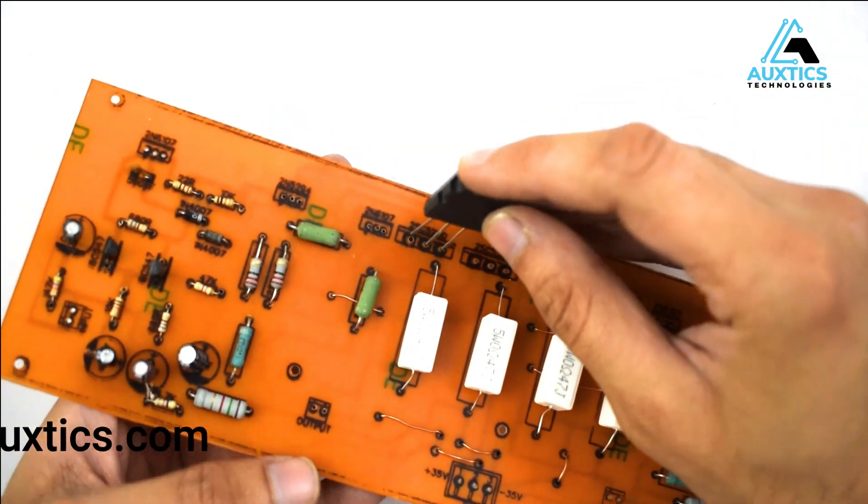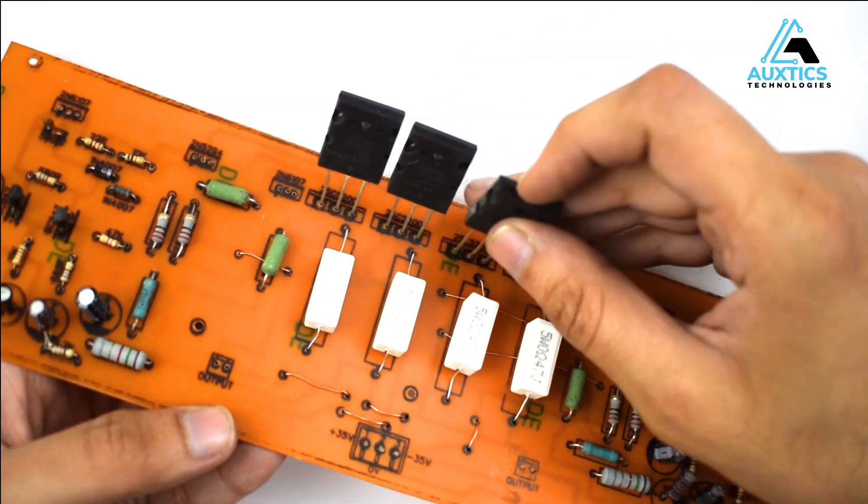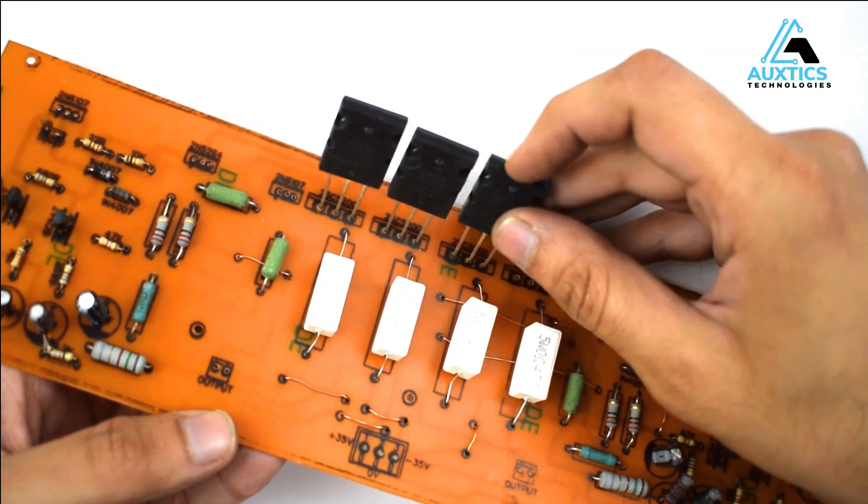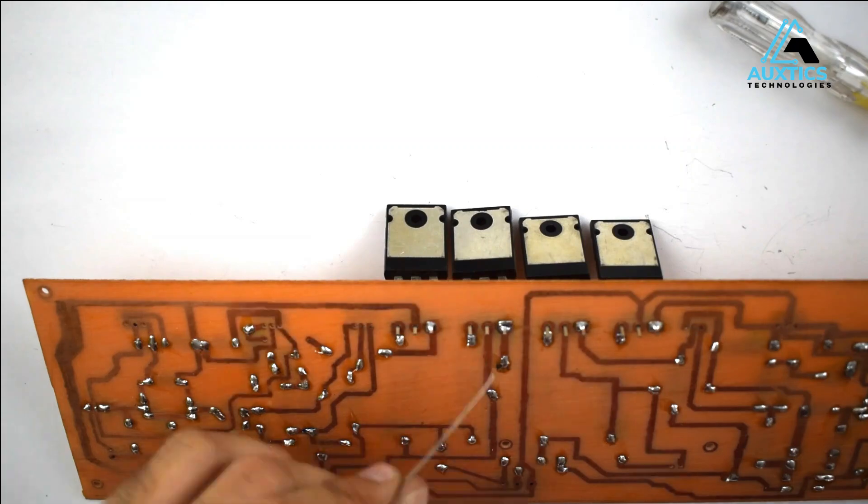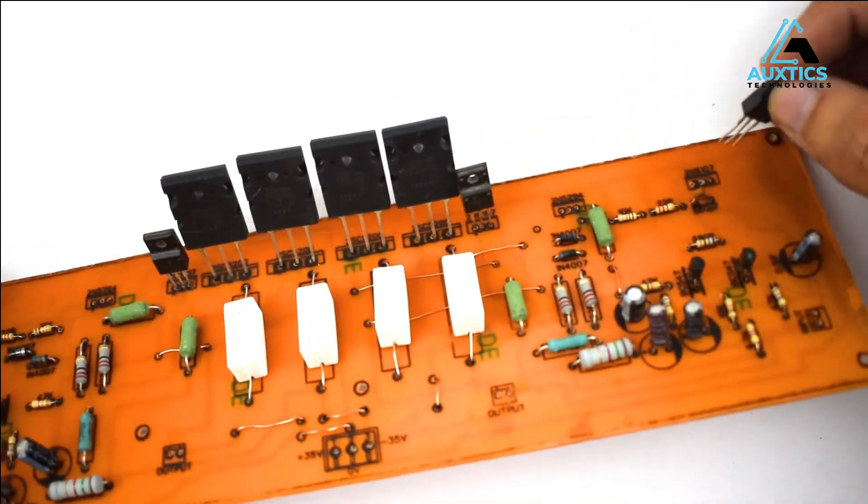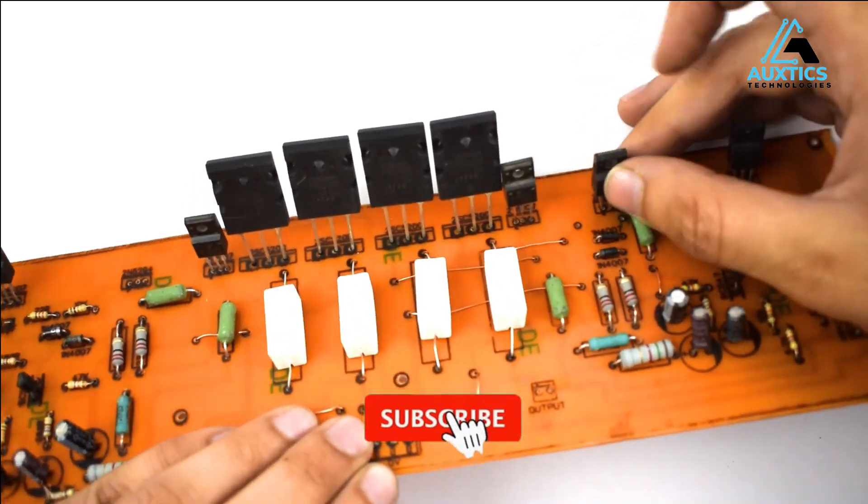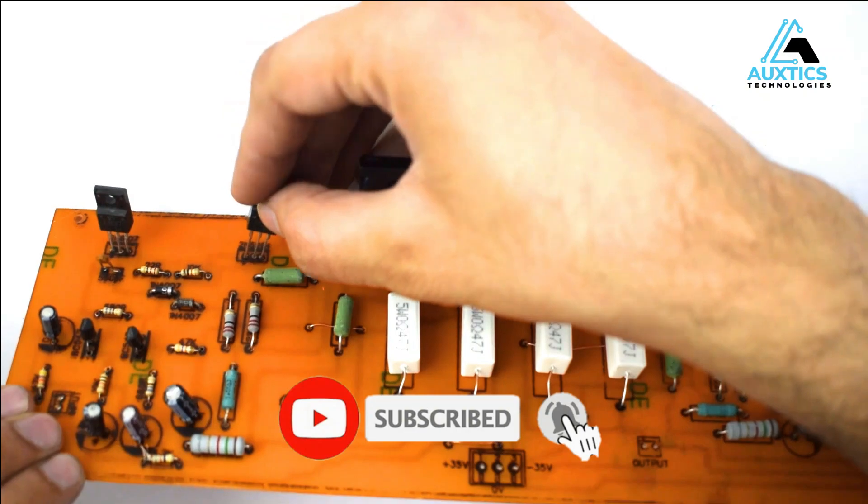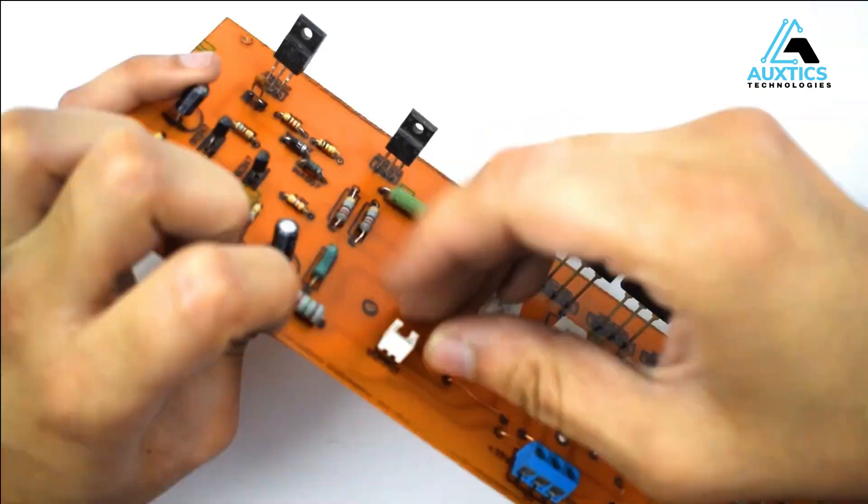After soldering all the resistors, capacitors, diodes, now it's turn to place the transistors. I'll start from the bigger ones and now we will solder the smaller ones, output and input connectors, and solder them.